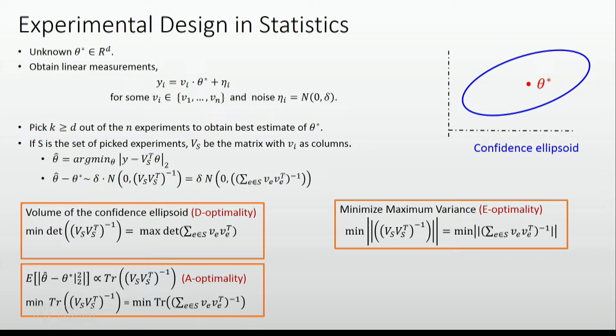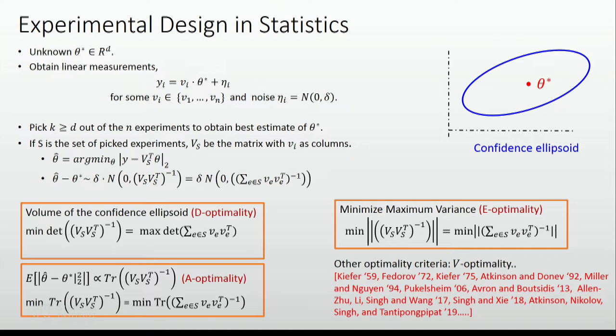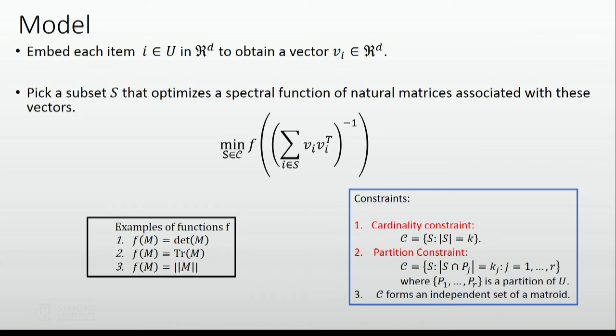There is a whole set of optimality criteria studied in statistics, but we'll focus on the simple linear model and try to understand what the algorithms are and prove guarantees about them. Mostly, we'll be concentrating on approximation algorithms, trying to prove worst-case guarantees. This general model subsumes the problems already discussed, for different spectral functions F, focused so far on cardinality constraints, but one can ask for more general constraints.